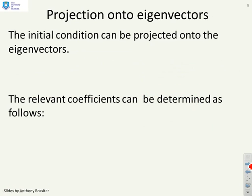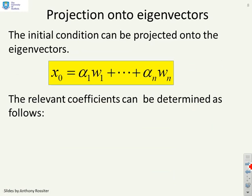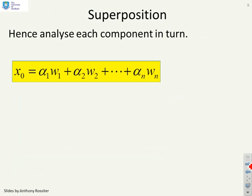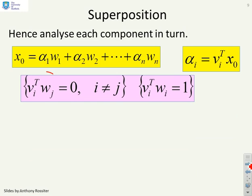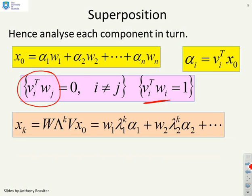The initial condition can be projected onto the eigenvectors. You can write x(0) = α₁w₁ all the way up to αₙwₙ. And the relevant coefficients can be determined from the left eigenvectors as αᵢ = vᵢᵀx₀. We've got our linear combination of eigenvectors making up our initial condition x(0). And we know our properties of eigenvectors, things like vᵢᵀwⱼ is 0 if i is not equal to j, but vᵢᵀwᵢ equals 1.